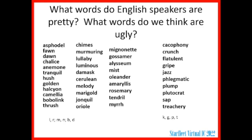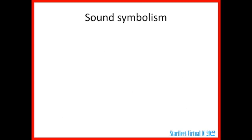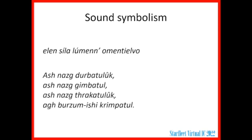Other people have used this kind of sound symbolism when they created other languages. If you have one group of people that says things one way and another group that says things another way, you don't really need to be told that the first one is the good guys and the second one is the bad guys. You'll notice how much m and n is in that first one, and how much g, k, and t is in the second. These are, in fact, Tolkien's Elvish and Mordor speech.